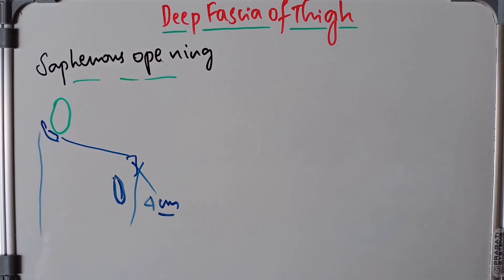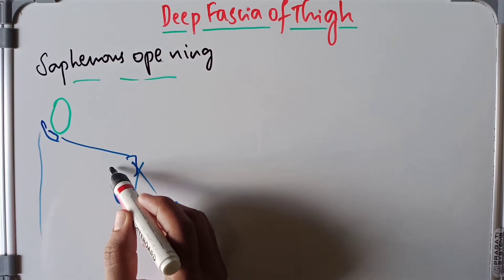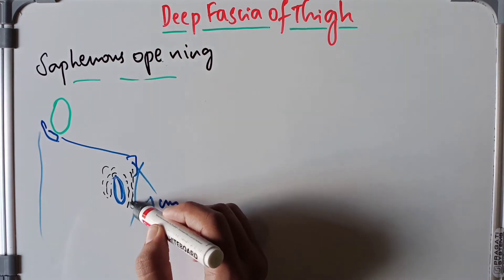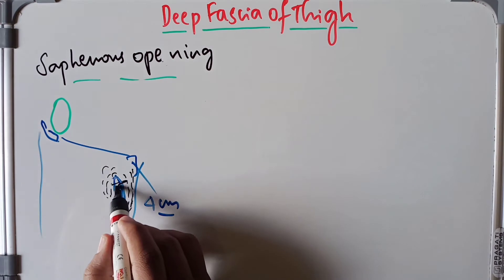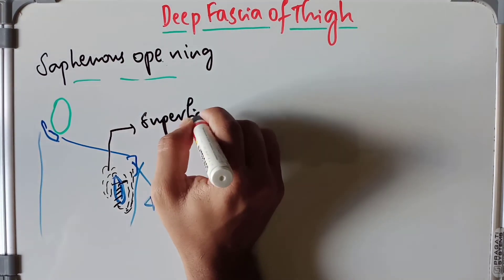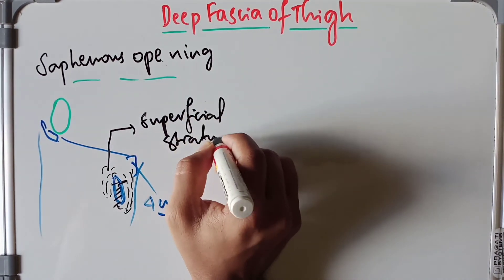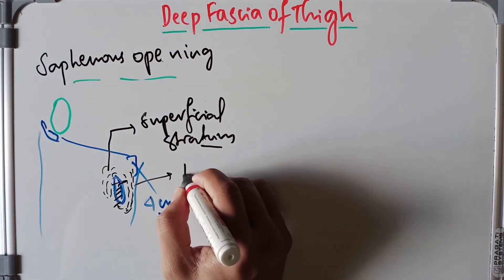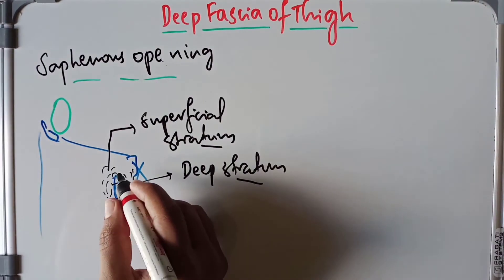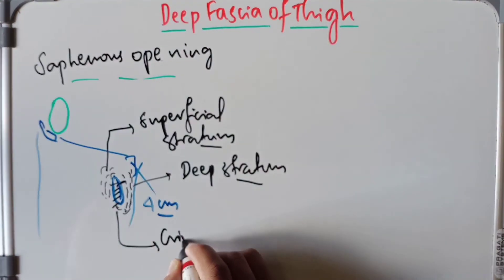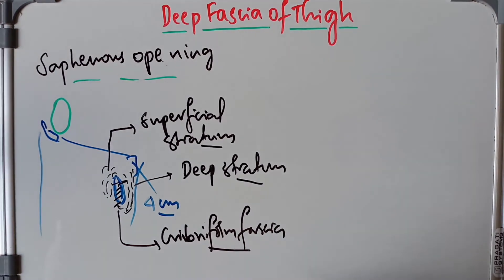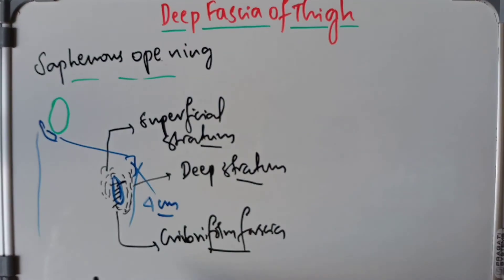It is formed by the superficial stratum of the fascia as well as the deep stratum. So we have the superficial stratum of the fascia lata and the deep stratum of the fascia lata, and it is covered by a layer known as the cribriform fascia.